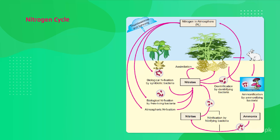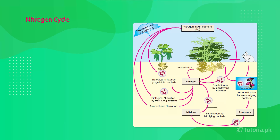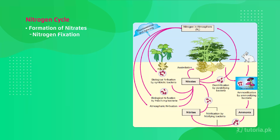Next comes the nitrogen cycle. The nitrogen cycle has different steps. The first step is the formation of nitrates. Nitrates form in two ways: nitrogen fixation and nitrification.